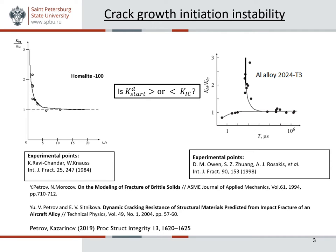In statics, we can generally agree that the crack starts to propagate when the stress intensity factor reaches some a priori known ultimate value K1c. This is the well-known Irwin's criterion. On the other hand, the situation when dynamic loading is involved can be far more complicated. In dynamics, the critical stress intensity value can exceed or even be lower than the K1c value. And sometimes it is unstable and depends on the way of loading of the same material. This was discovered in numerous experiments by Shockey, Kalthoff, Homma, Ravichandran, and other researchers, and it remains a matter of numerous discussions about the nature of dynamic fracture toughness.